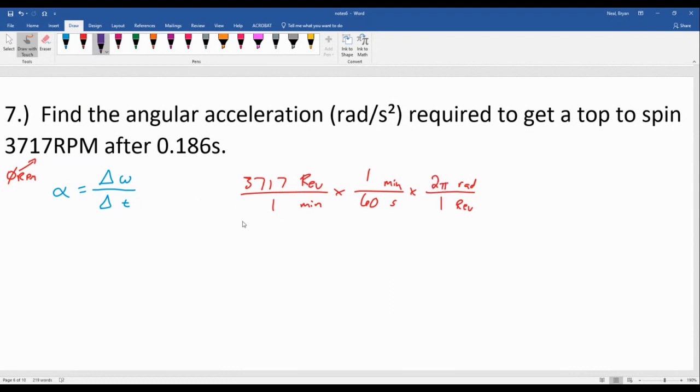And then just like before, you can run this through the calculator all at once. So 3717 times 2 times pi divide by 60. Minutes and minutes will cancel, revs and revs will cancel. We've got radians and seconds left. So that's great. We get 389.243.